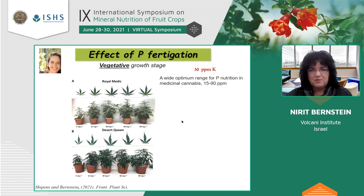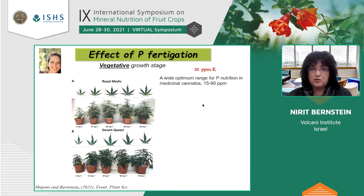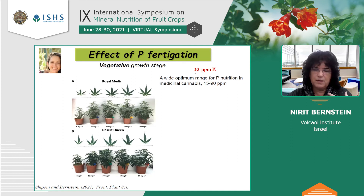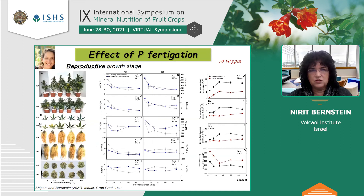The last nutrient I'll briefly discuss today is phosphorus. This work was done by Sivan Shiponi, a master's student in the lab, who conducted two experiments — both now published. For the vegetative growth stage, we found a wide optimum range: 5 ppm was the deficiency range, but above this — between 15 and 19 ppm — the plants looked good and developed okay, so there's a wide acceptable range. In the lab we apply 30 ppm phosphorus so as not to be too close to the deficiency range.